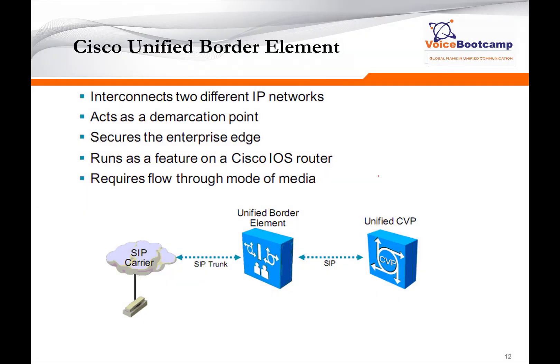The CUBE, or Cisco Unified Border Element, is basically a router with special IOS that provides connectivity between two IP networks. It acts as a demarcation point and a secure enterprise edge, running as a feature of an IOS router so you don't have to install anything separately. It requires flow-through mode of media if you are communicating with the CVP server.